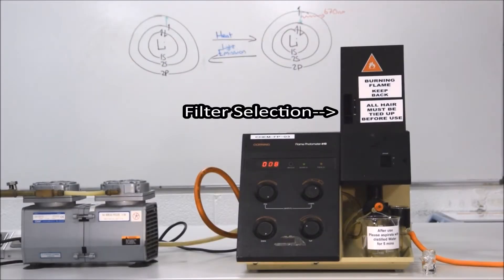The first thing we need to do is decide what particular element we're going to measure. This particular model has three filters: sodium, potassium and lithium, and we can select the one that we want to use. In our case, sodium.